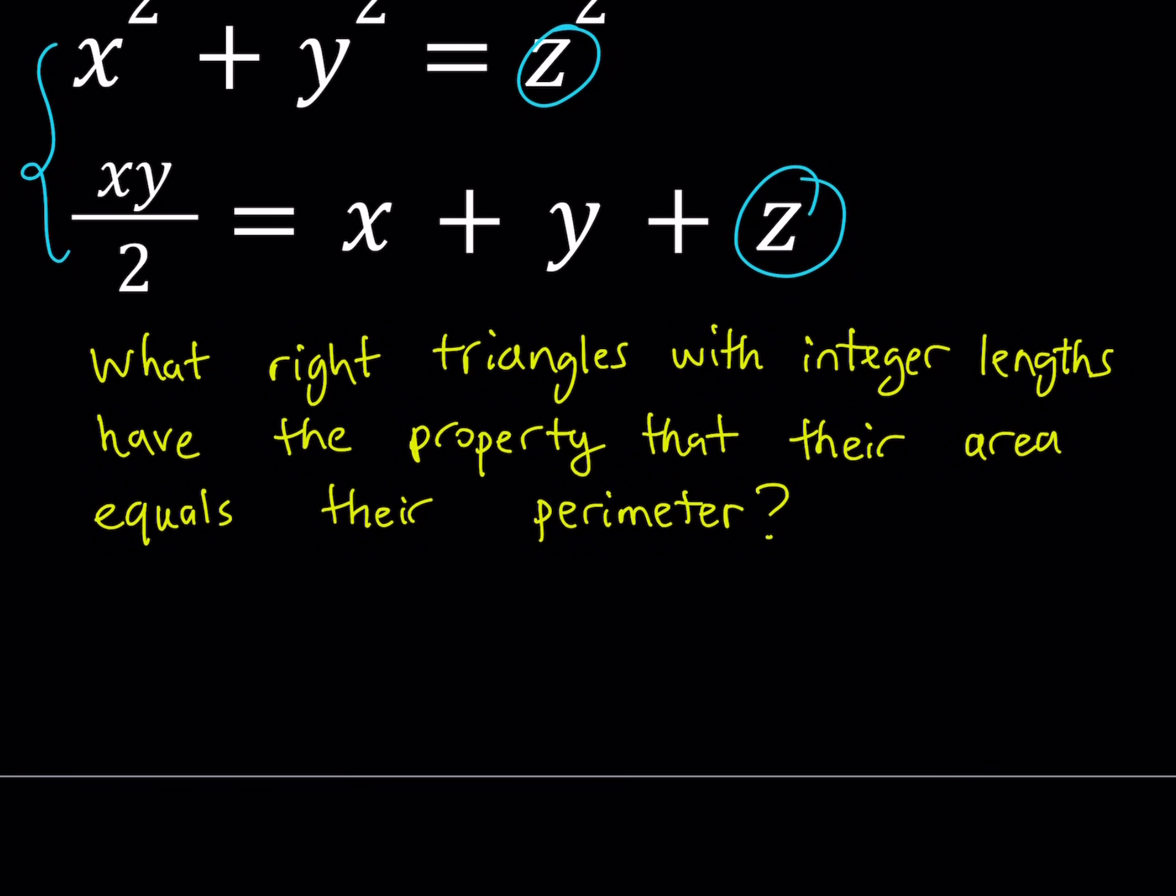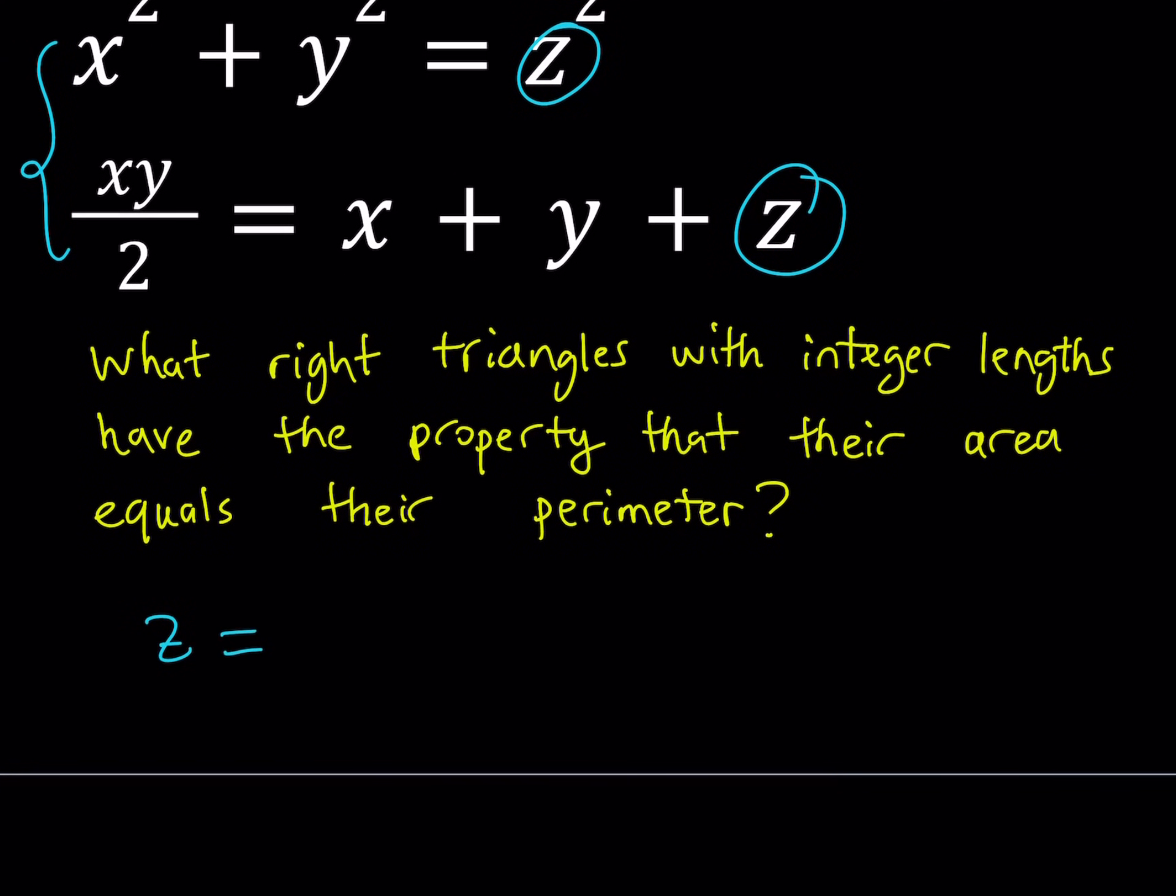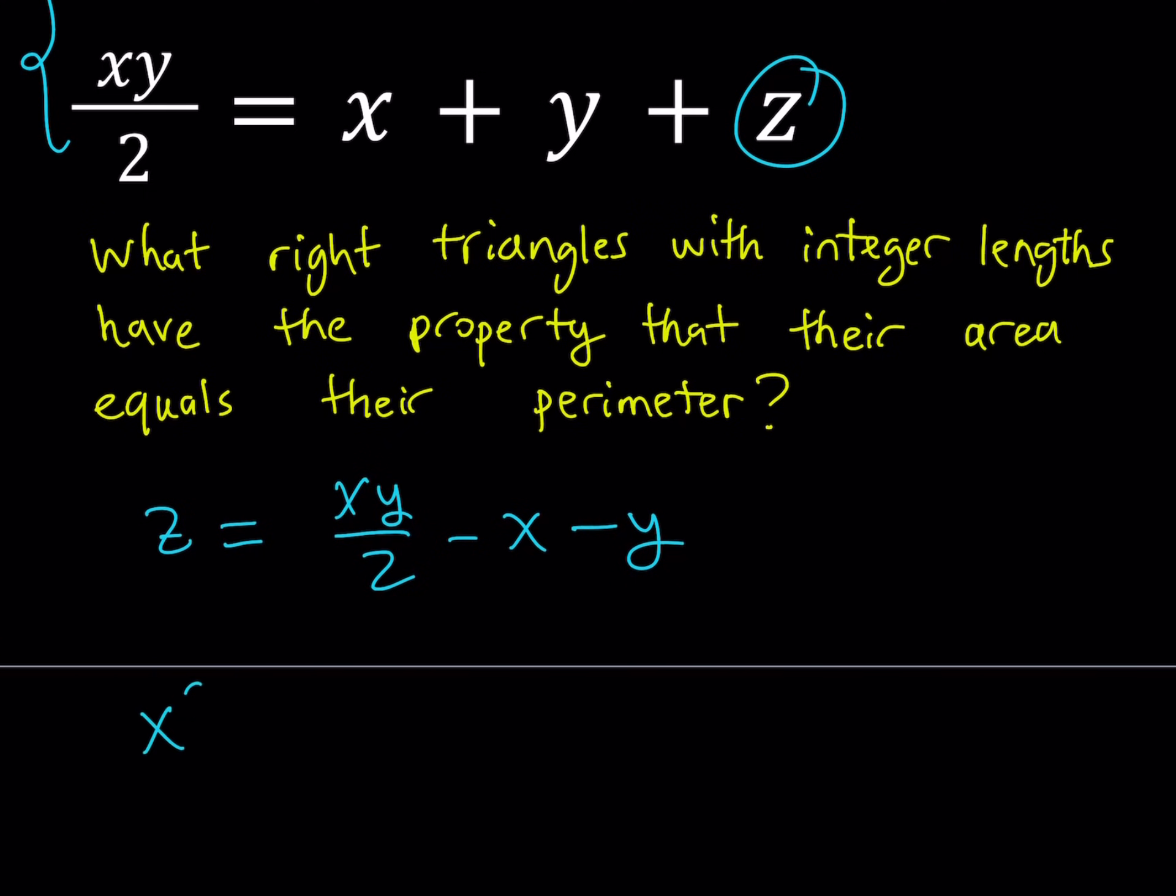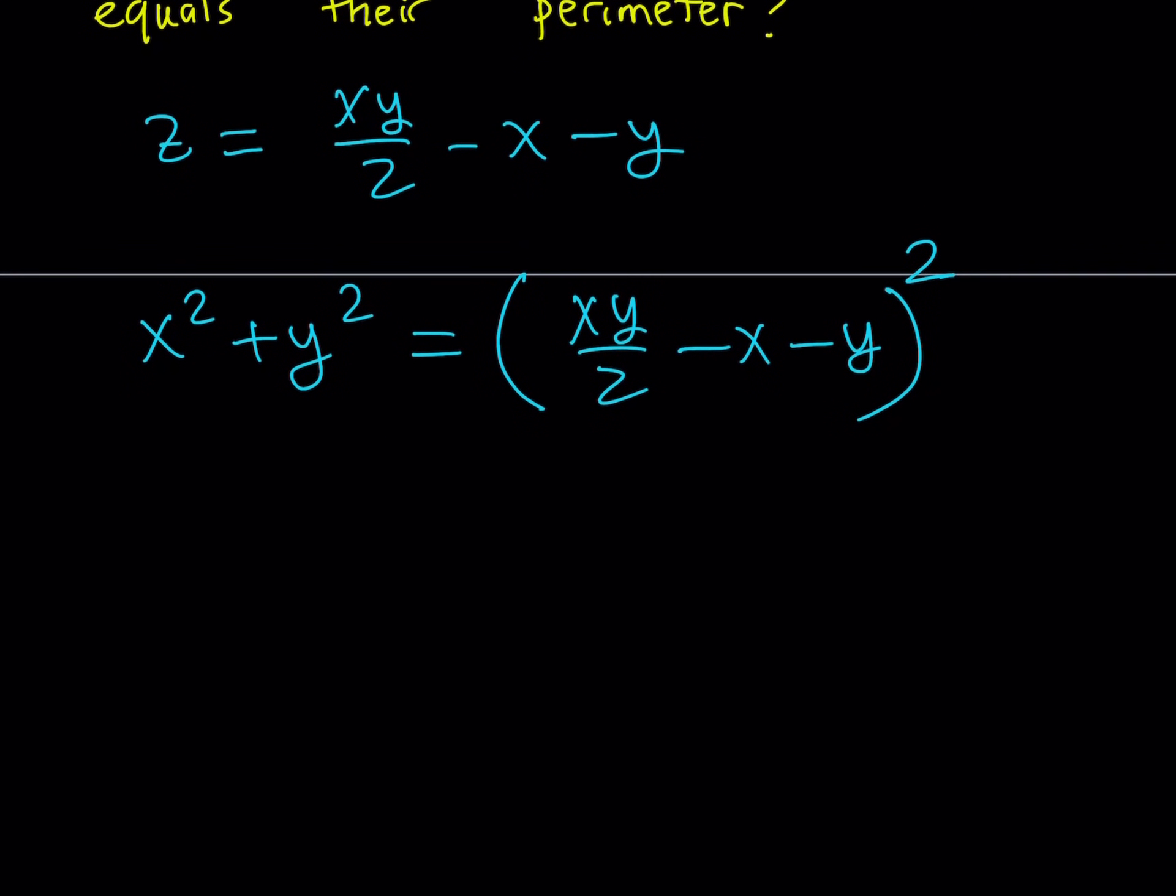So if you isolate z, it's going to equal xy over two minus x minus y. And let's go ahead and substitute that in the Pythagorean relationship. x squared plus y squared is equal to z squared, which can be written as xy over two minus x minus y, and then you're going to square that. Well, this is the equation that I was talking about. It's in two variables. We got rid of the z for now. At least we can go back to it later by substitution. But is this equation really simple?